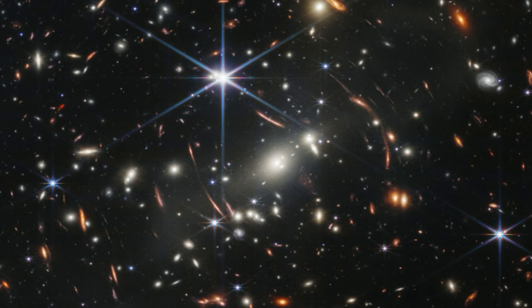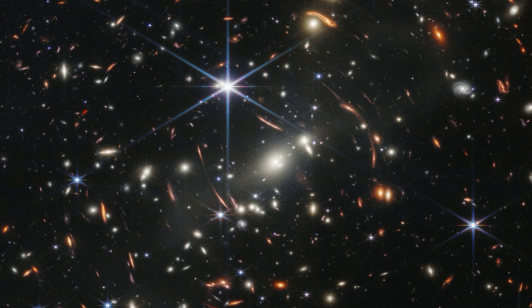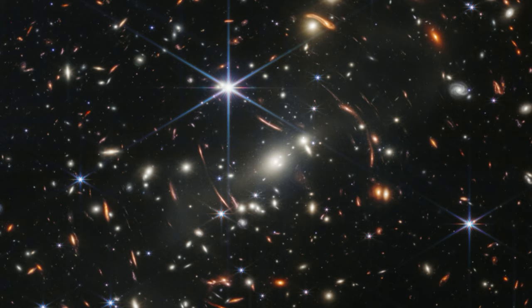This starlight took roughly 13.5 billion years, or most of the age of the universe, to travel to us, arriving at the James Webb Space Telescope after the space-time warping gravitational pull of the galaxy cluster SMACS 0723 steered the distant light into focus.